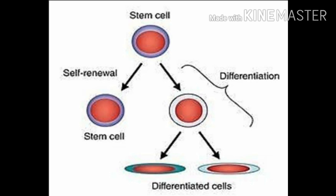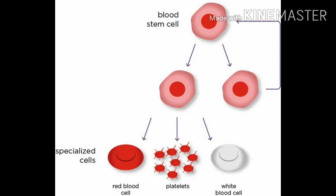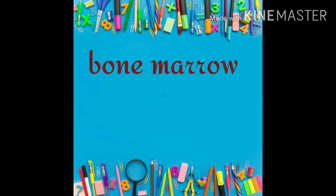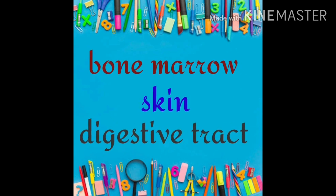Stem cells are found in the bone marrow, skin, digestive cells, as well as teeth and liver cells. They allow the body to regenerate and produce more cells.